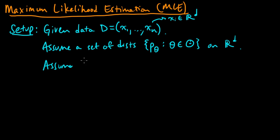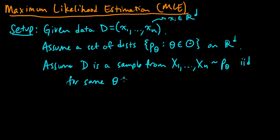And we will assume a probabilistic model for our data. We'll assume that D is a sample from some random variables X1 through Xn, distributed according to one of these P theta, and they're iid for some theta in capital theta.